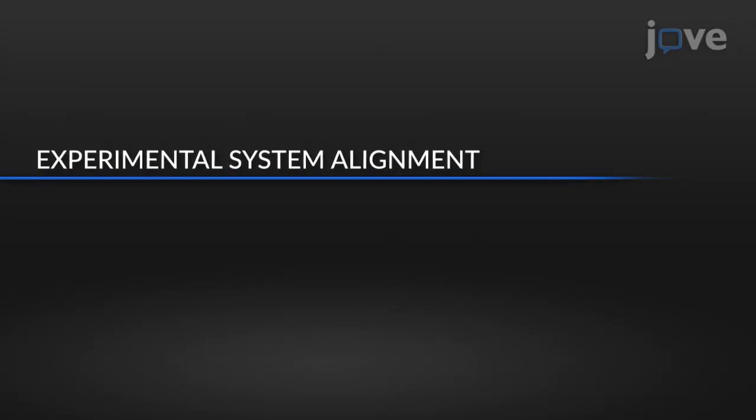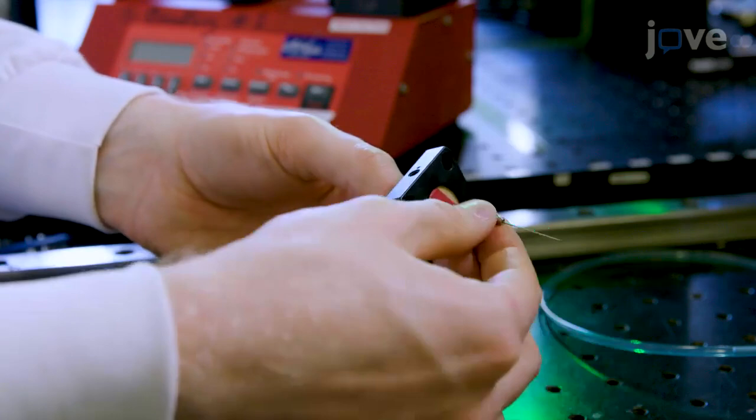To align the experimental system, position the needle mount at eye level for ease of loading, and check that tubing is not twisted.